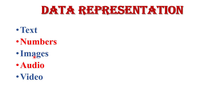An image is worth a thousand words. In computers, images are digitally stored. A pixel is the smallest element of an image. Pixels are represented in the form of bits depending upon the type of image — black and white image or color image — where each pixel requires a different number of bits to represent its value. The size of the image depends upon the number of pixels, also called resolution.